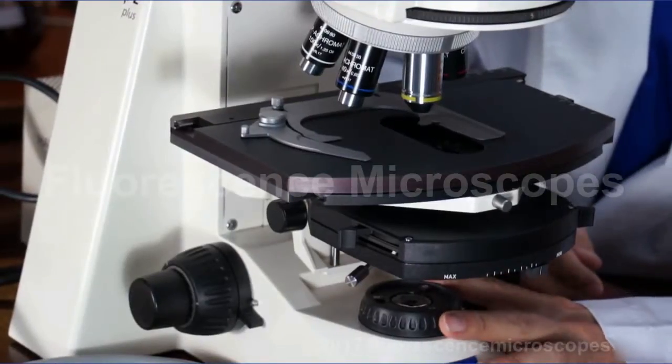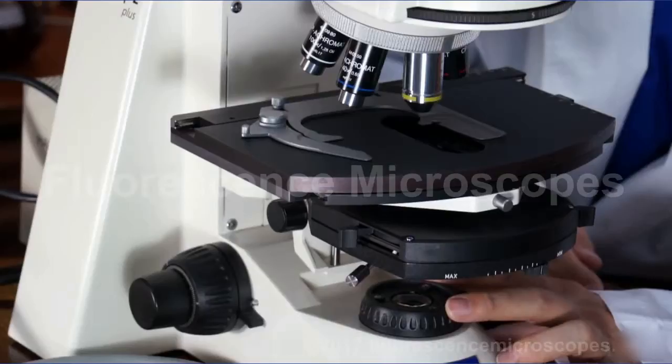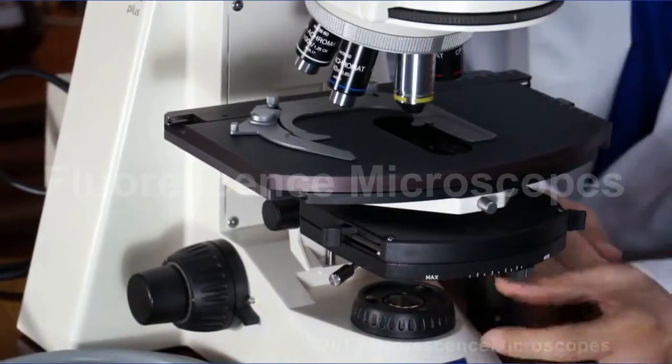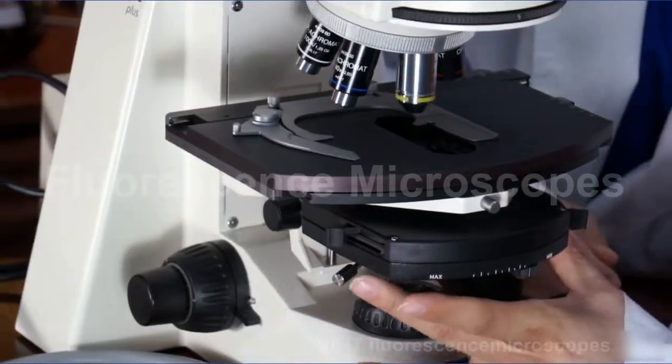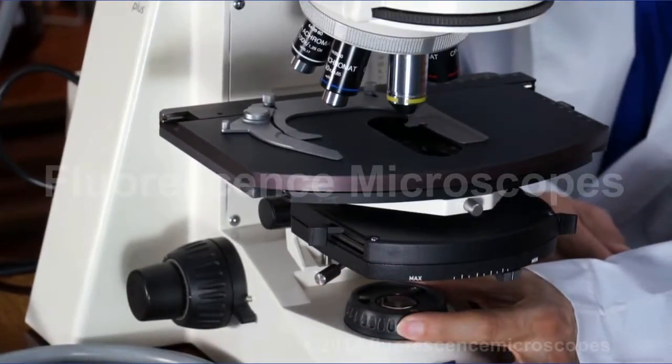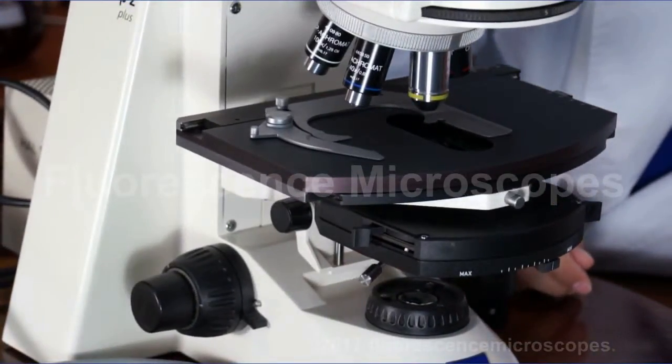The first thing to do on the microscope, or really on any microscope, is to set Kohler illumination. So once you've raised and lowered this so that the field diaphragm is in focus, you center it. Then you open up this aperture, this diaphragm, just past the field of view. Then you've got proper Kohler illumination set.